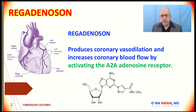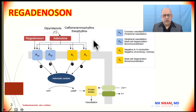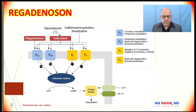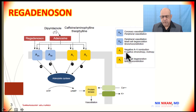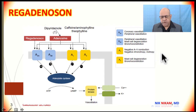Before we go any further, let us look at the adenosine receptors in the body and their roles. There are adenosine 1, adenosine 2 which is subdivided into adenosine 2A and 2B, and then we have adenosine 3 receptors scattered throughout the body.